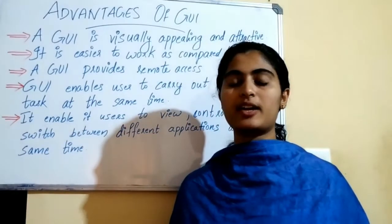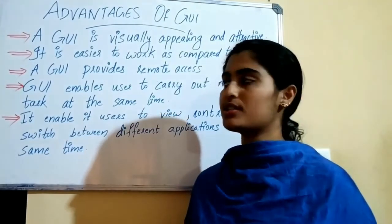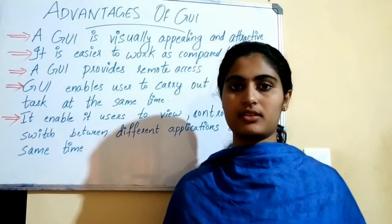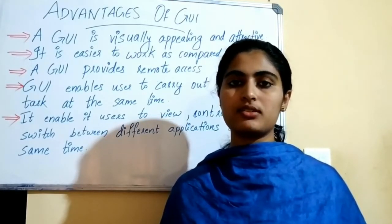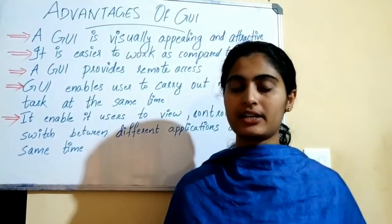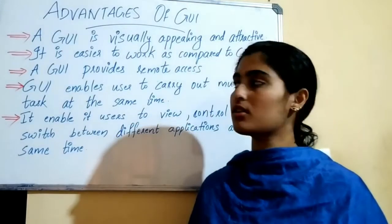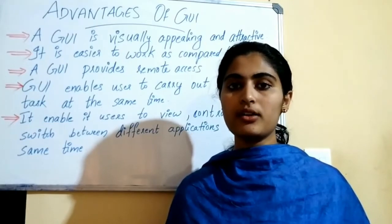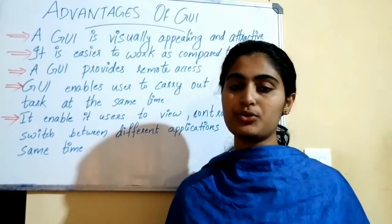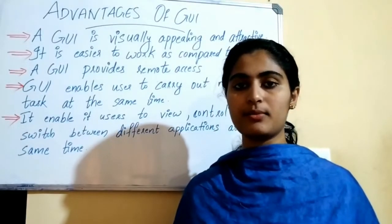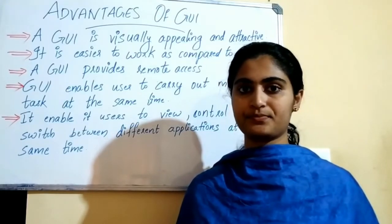Now the advantages of GUI. First, a GUI is visually appealing and attractive — CUI is just a black screen with text and symbols, but GUI has menus, icons, buttons, and toolbars. Second, it is easier to work with compared to CUI, because in CUI you have to type and remember all commands, whereas in GUI users don't have to remember any commands and can do tasks by simply clicking the mouse.